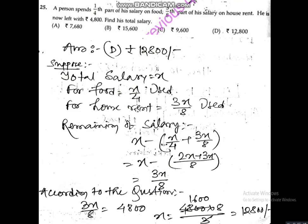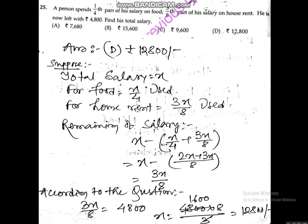In question number 25, a person spends one-fourth of his salary on food, three-eighths of his salary on house, and is left with 4,800. Find his total salary. The answer is option D — 12,800. Let total salary be x. Spent: x/4 on food, 3x/8 on house. Remaining: x − (x/4 + 3x/8) = 3x/8. Setting 3x/8 = 4,800 gives x = 12,800.